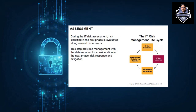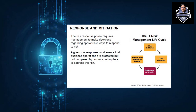Once all risks are identified, you move to risk assessment. There are many types of risk assessments — quantitative, qualitative, and others — covered in other videos on this channel. After assessment comes the response and mitigation phase, which requires management to make decisions on how to respond to risk. Options include transferring risk, accepting risk, or avoiding risk. You then put relevant controls in place to address the identified risks.